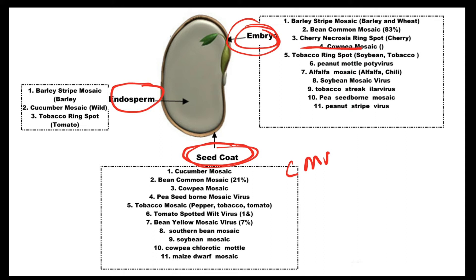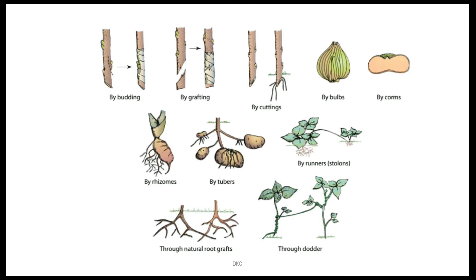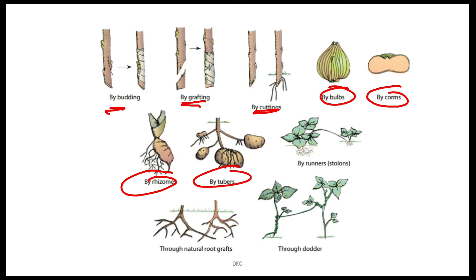Transmission by vegetative propagation — for example, citrus mosaic virus. Different vegetative propagation methods are: budding, grafting, cutting, by bulb, corms, rhizomes, tubers — through all of these, the virus transmits from infected host to healthy host.